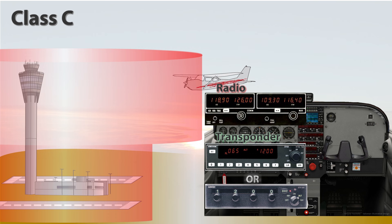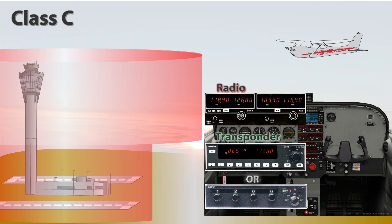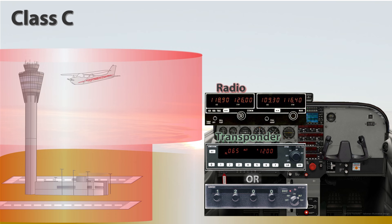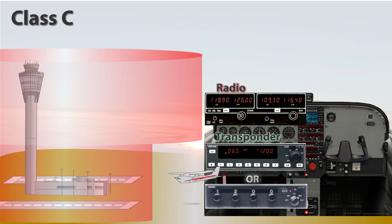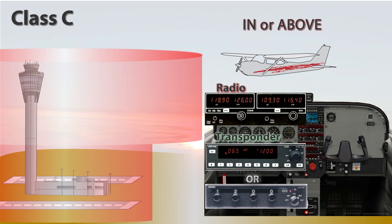Not only is a transponder required to operate within a Class C, but we must also have one if we plan to fly above a Class C. We do not, however, need one if we plan to fly under the overlying shelf of the airspace. If we were to fly over top of the airspace, ATC should know our altitude since we could potentially fly directly over top of the airport. Without a Mode C transponder, the controller may only see our location and would have no indication if we were only a couple of feet above the airport or several thousand feet up. When we fly under the shelf, an altitude reporting transponder is not needed since we will remain outside of the inner ring. So the thing to remember is we need a Mode C transponder to operate in or above a Class Charlie airspace.